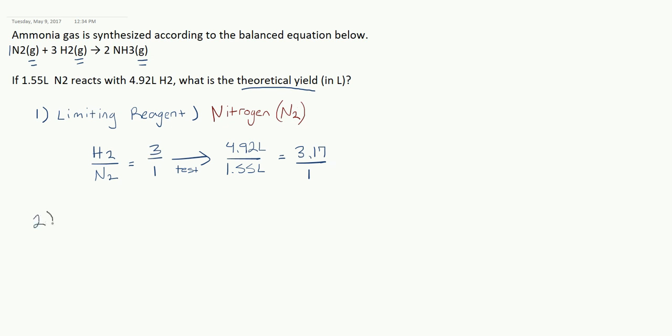Having determined the limiting reagent, we have enough information to calculate the theoretical yield. Because the theoretical yield is controlled exclusively by the limiting reagent. And I'm going to look at this limiting reagent, the nitrogen, relative to the NH3. And I see from the formula that the ratio that the reactant to product should occur in is 1 to 2.